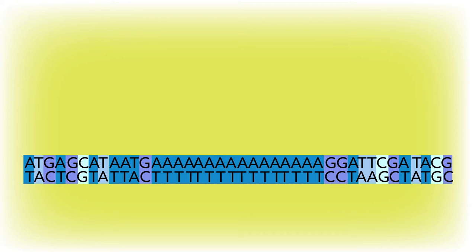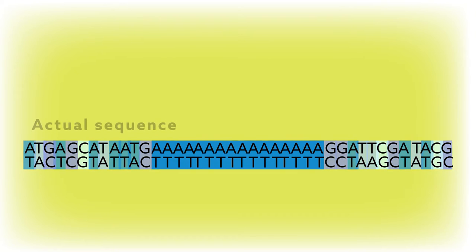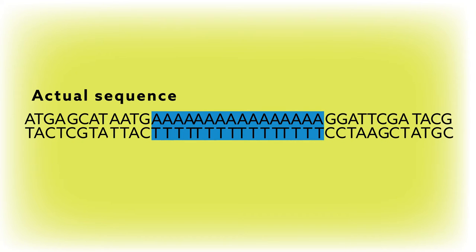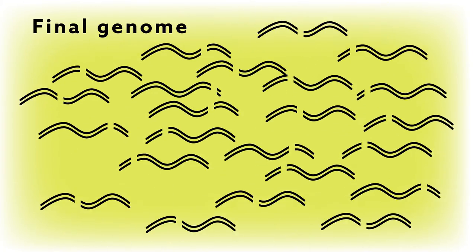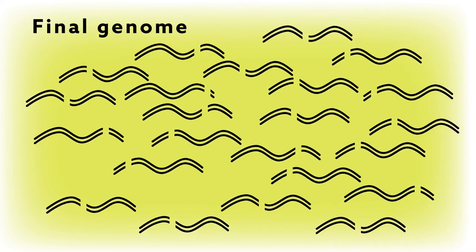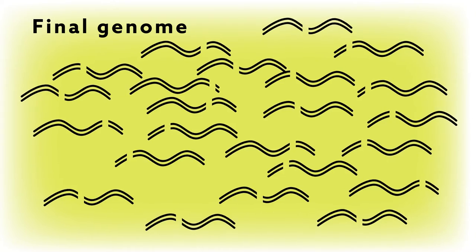The problem with using short reads of this kind is that long stretches of repetitive DNA, which are common in the human genome, are truncated by assembly software. This leads to gaps in the final genome that could hold important information about the presence of, or potential for, disease.